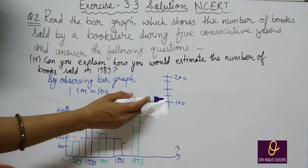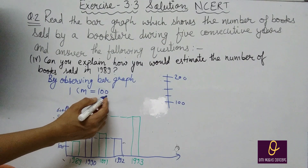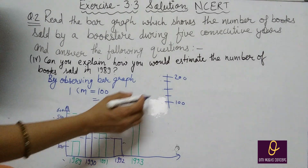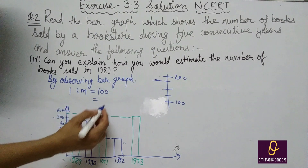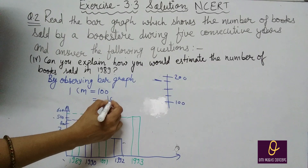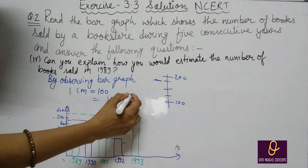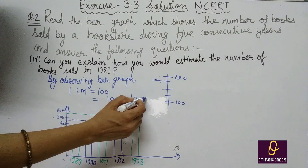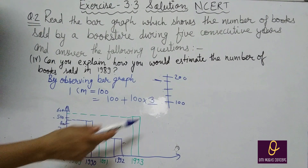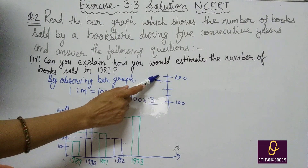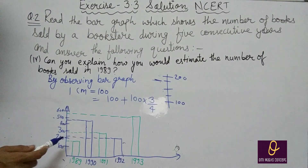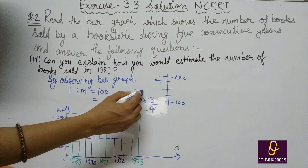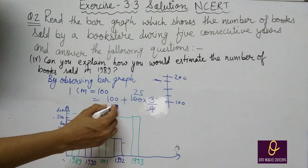इसको fraction की तरह करेंगे. जो यह वाला part है उसके लिए: 100 तो already है, plus अब 100 का कौन सा part है? यह 3rd part है, और total parts 4 हैं — divide by 4. तो 100 × 3/4 = 75. Total: 100 + 75 = 175 आया. इस type से आप observe करते हो.